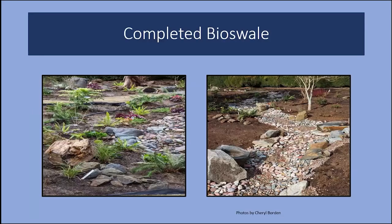I have one favorite bioswale on a residential property near me — a perfect example of how it can add to your landscape. They removed all the grass from the yard and disconnected the downspout at the corner, and this bioswale meanders throughout the property. They added a lot of rock in this design, though purchasing rock can be expensive. This was designed by an architect whose parents live on the property. They put in native plants and installed an irrigation system to ensure plants receive water during dry periods. This particular bioswale used entirely native plants and it's lovely now that it's finished and filling in.